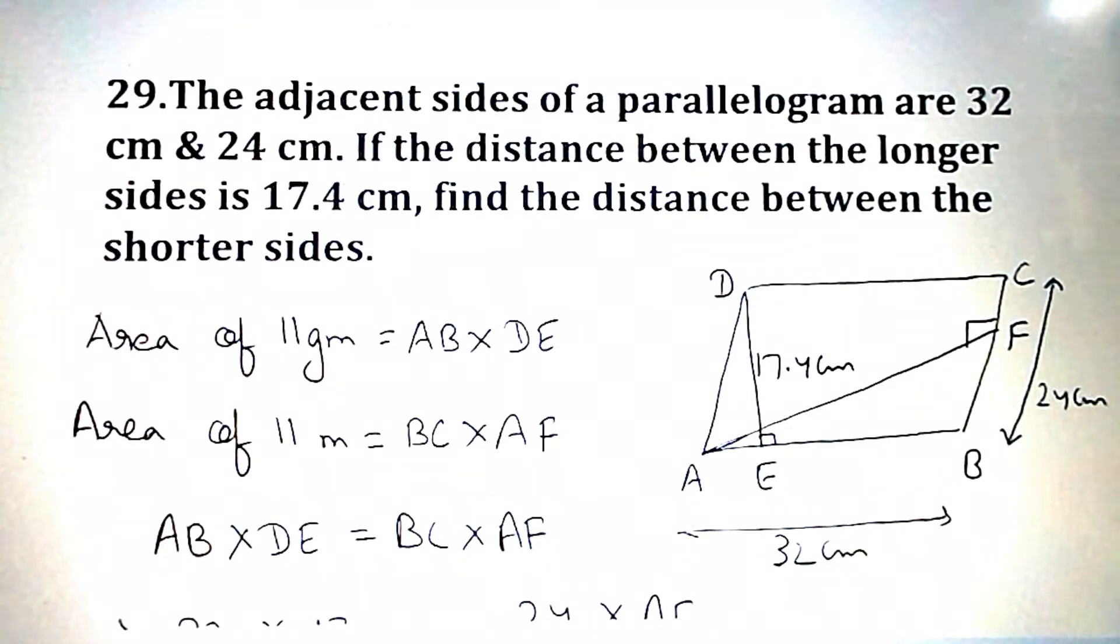Distance between the longer side is 17.4 centimeter, that is DE is equal to 17.4 centimeter. Then we have to find the distance between the shorter sides, that is AF.